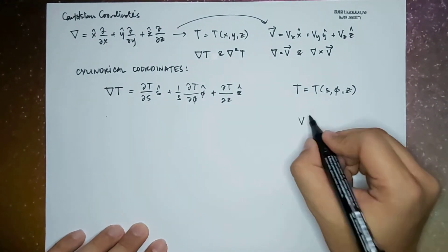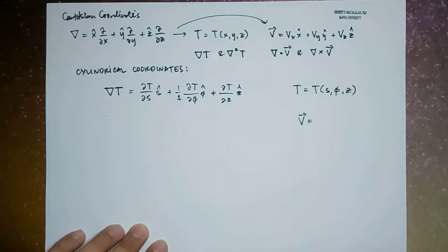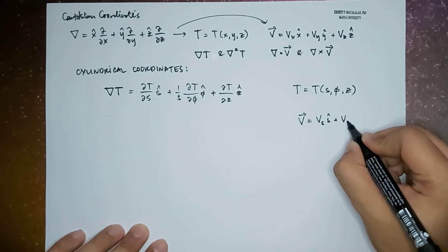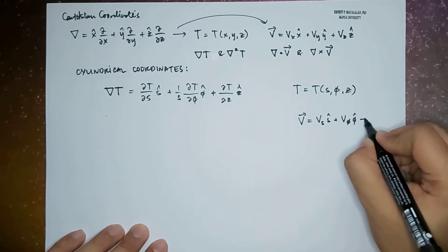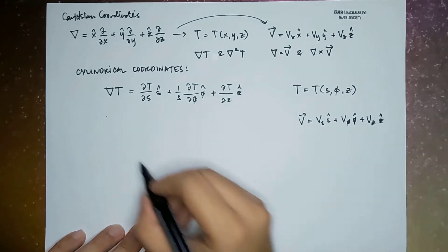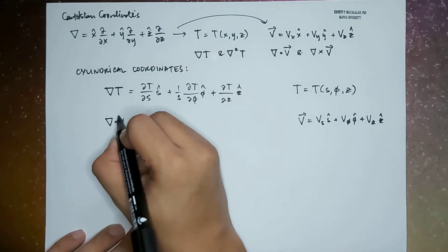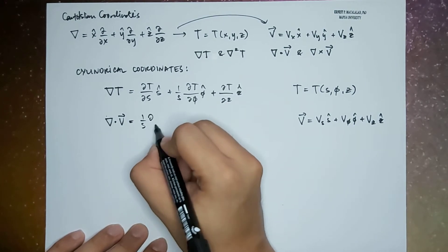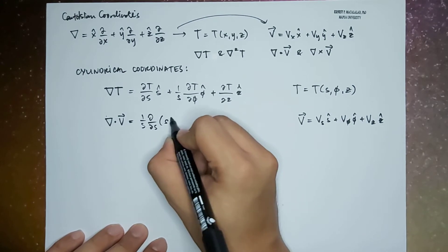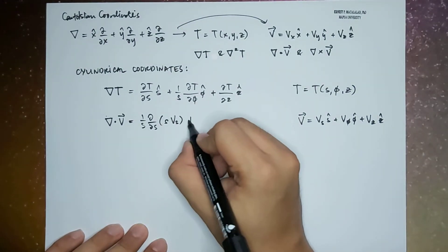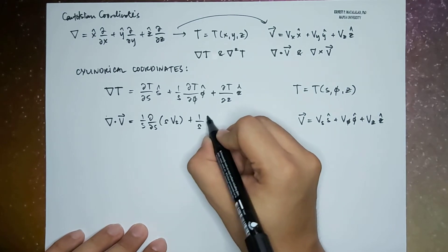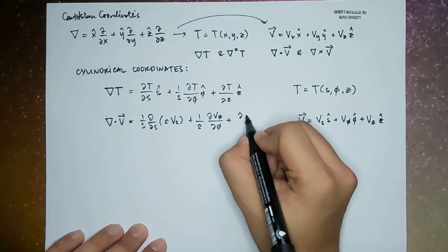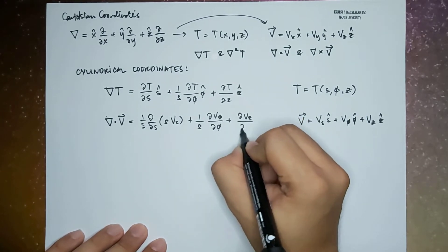If we have a vector in the cylindrical coordinate system given by v_s s-hat plus v_phi phi-hat plus v_z z-hat, the divergence of v is given by: 1 over s times the derivative with respect to s of s·v_s, plus 1 over s times the derivative of v_phi with respect to phi, plus the derivative of v_z with respect to z.